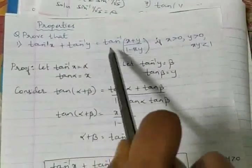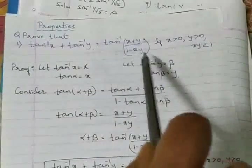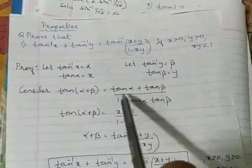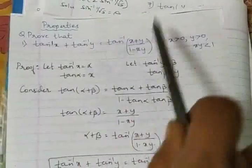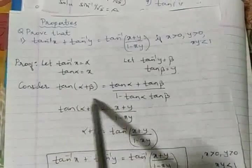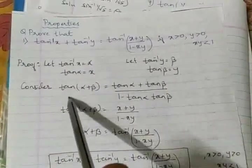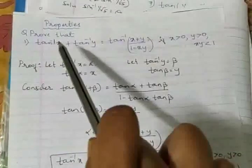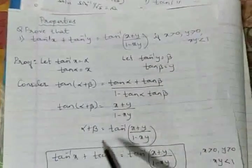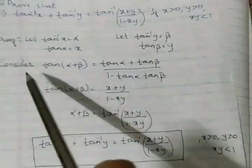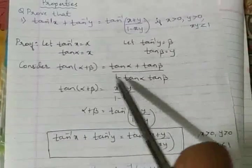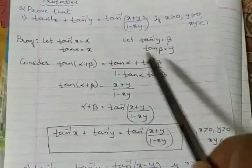Now comes the proof part. How to prove this one? Let us say tan⁻¹(x) = α. That means tan α = x, triangle. Let us say tan⁻¹(y) = β. That's tan β = y. So consider - you people are considering one of the trigonometric formula. Claim for formula straight away. The whole formula. What formula comes in your mind? We find tan(α + β) = [tan α + tan β]/[1 - tan α tan β].